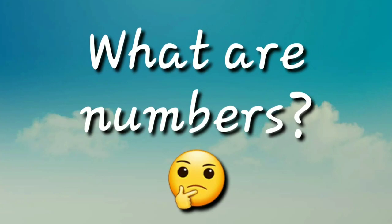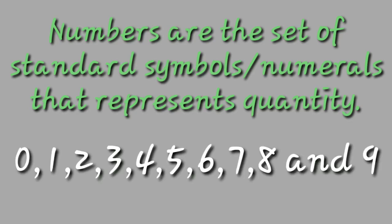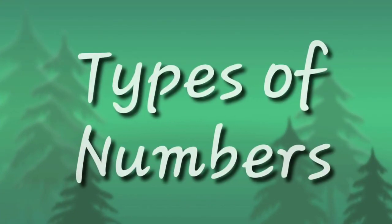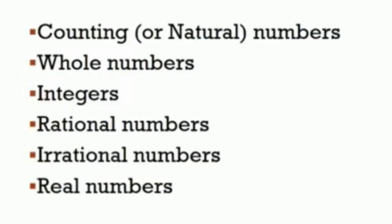Numbers also have different categories. Let us look into them one by one so that the concept will be clear to you. So the first thing that comes to mind is the definition of numbers. What are numbers? As we have studied already, numbers are the standard symbols or numerals that represent quantity. So 1, 2, 3, 4, 5, 6, 7, 8, 9 are all considered as numbers. Now our today's topic is what are the different types of numbers? The numbers can be categorized as counting or natural numbers, whole numbers, integers, rational numbers, irrational numbers, and real numbers. We will look into them one by one.